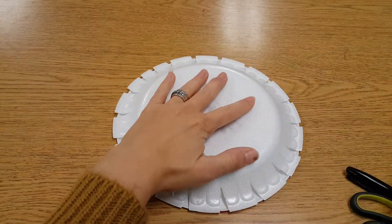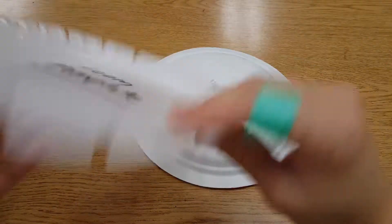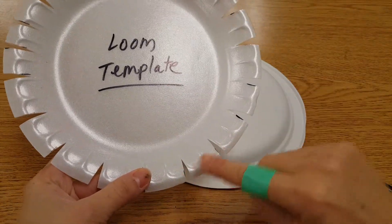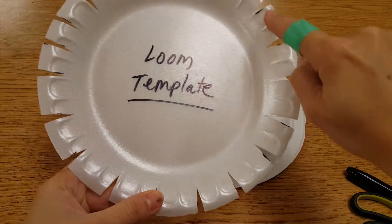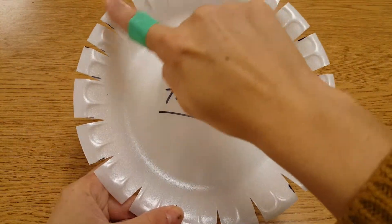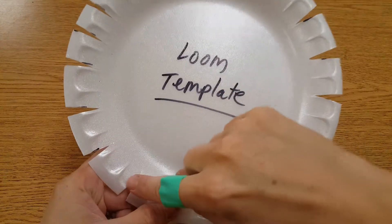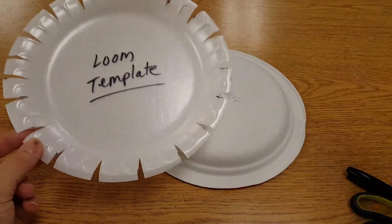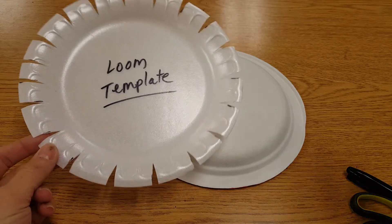You have to hold it down steady with one hand. There are going to be 19 notches. So if I start here: 1, 2, 3, 4, 5, 6, 7, 8, 9, 10, 11, 12, 13, 14, 15, 16, 17, 18, 19. If you do not have 19 notches, your loom and your weaving will not work correctly.